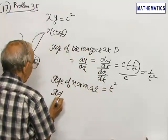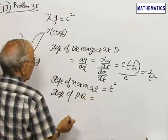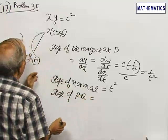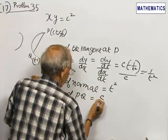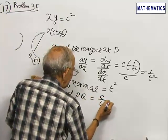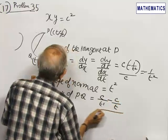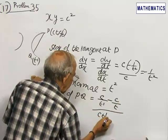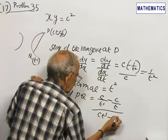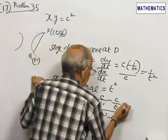So slope of PQ is the difference of Y coordinates by difference of X coordinates. C by T dash minus C by T, divided by C T dash minus C T. C gets cancelled.